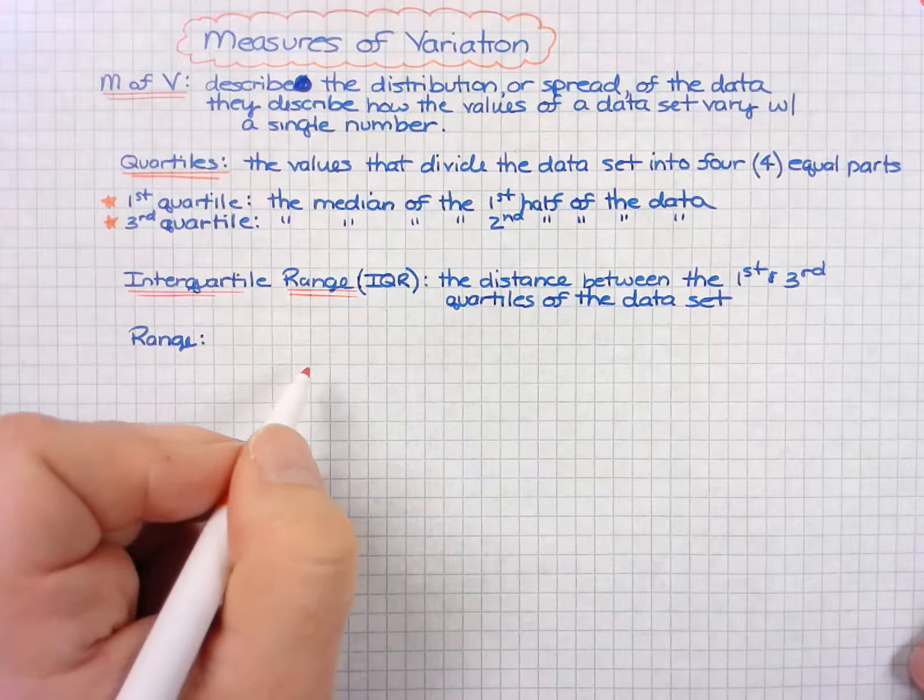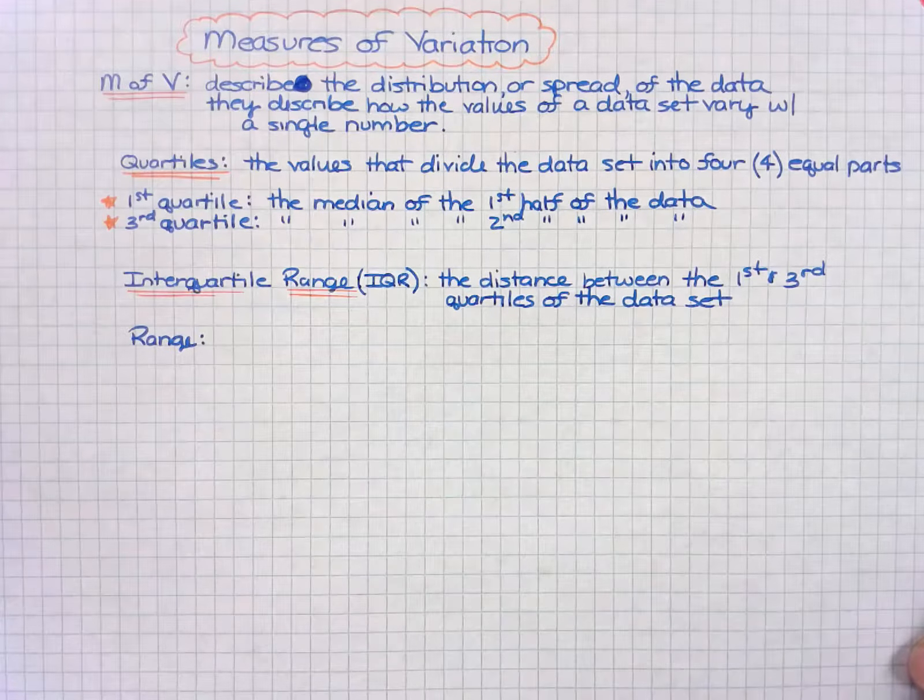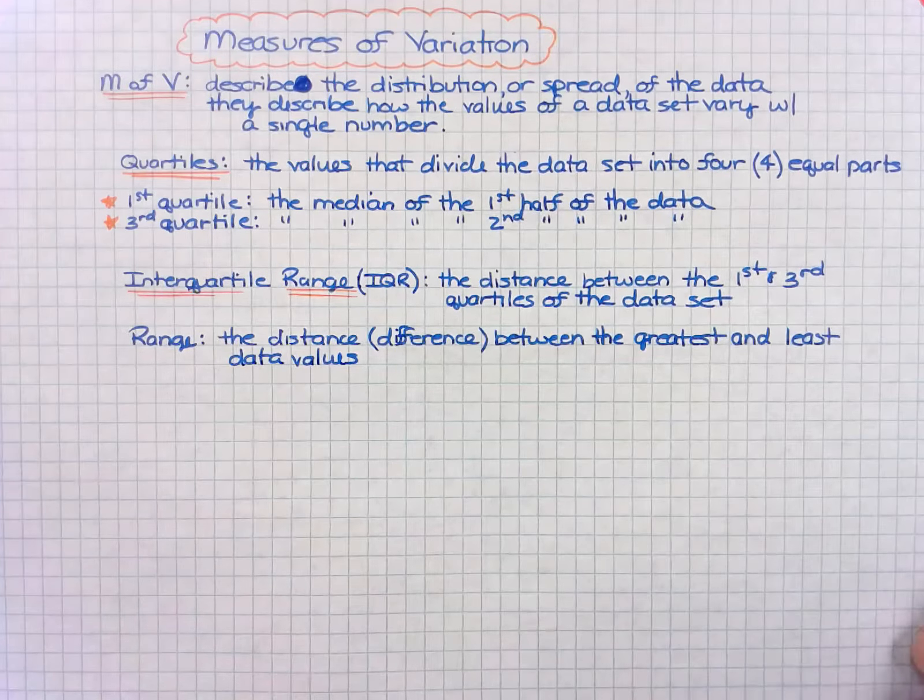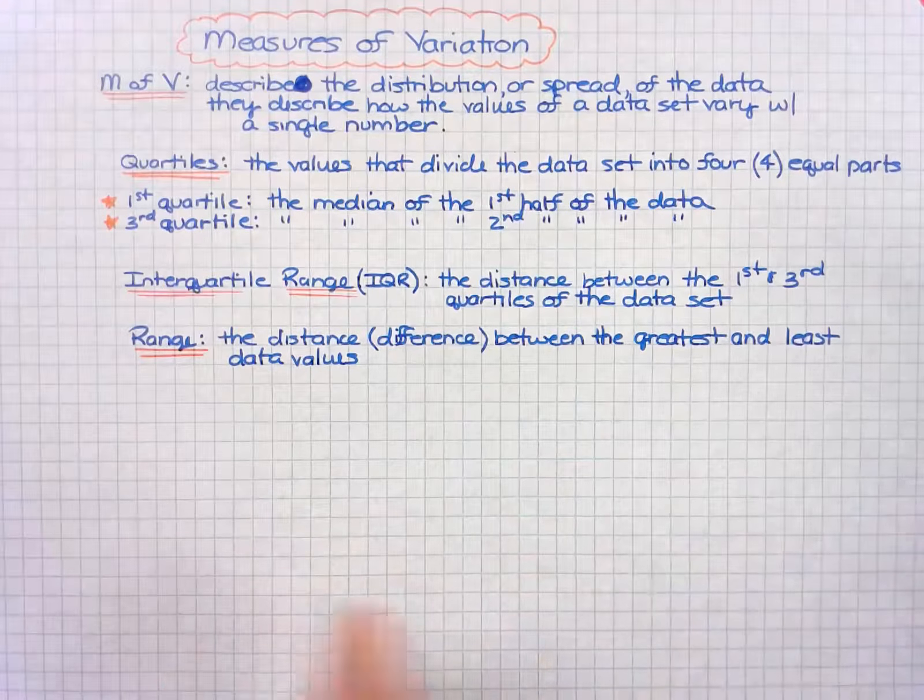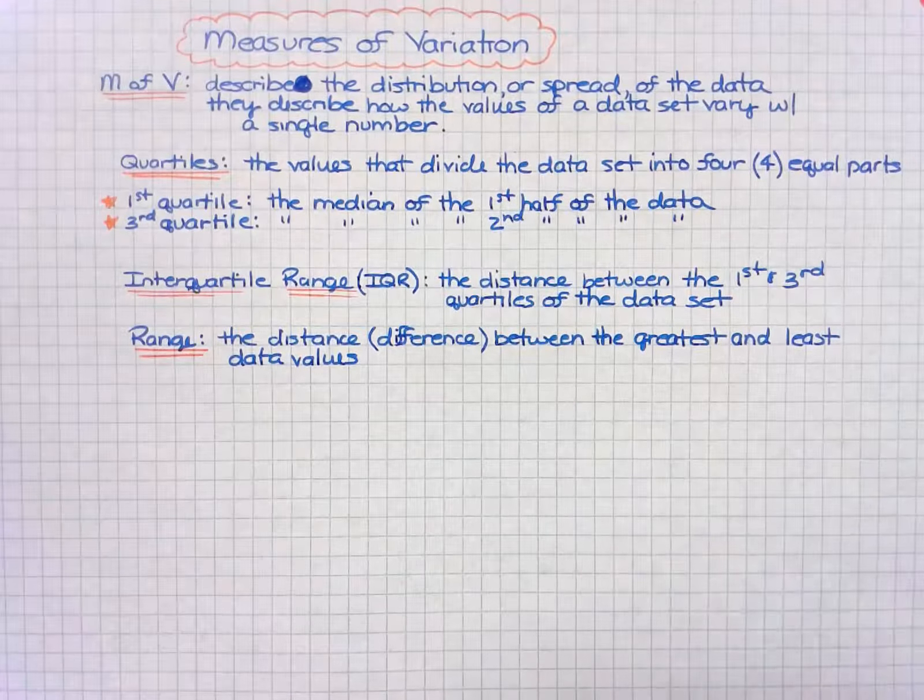The range is the difference between the greatest and least data values. So what does this look like in terms of a data set?